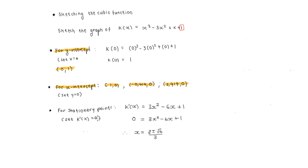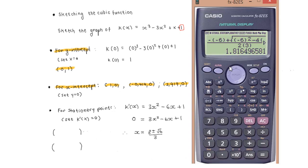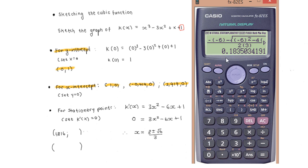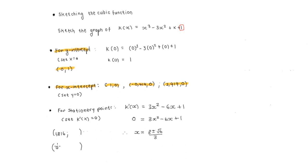So we get x equals 3 plus or minus root 6, all over 3. The x-coordinates at the stationary points are approximately 1.816 and 0.184.